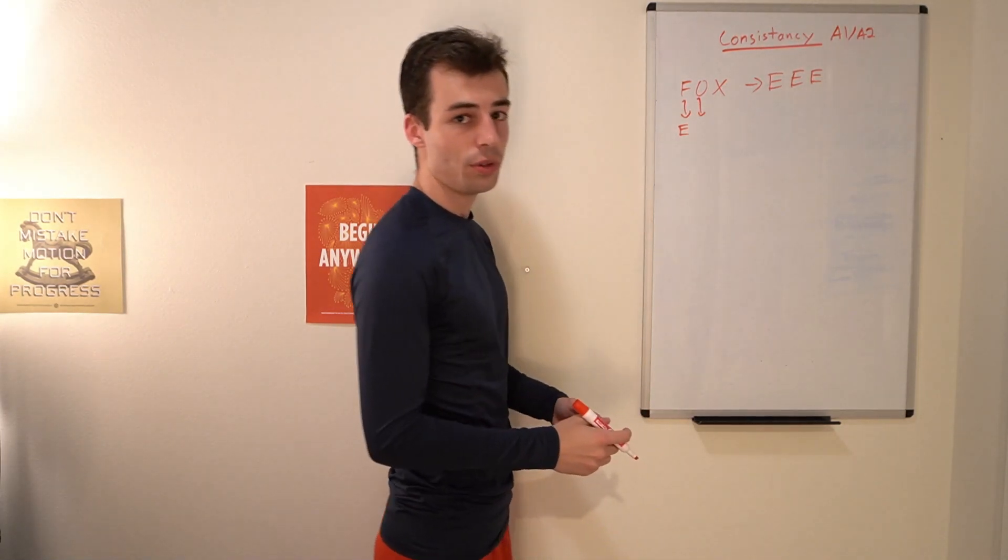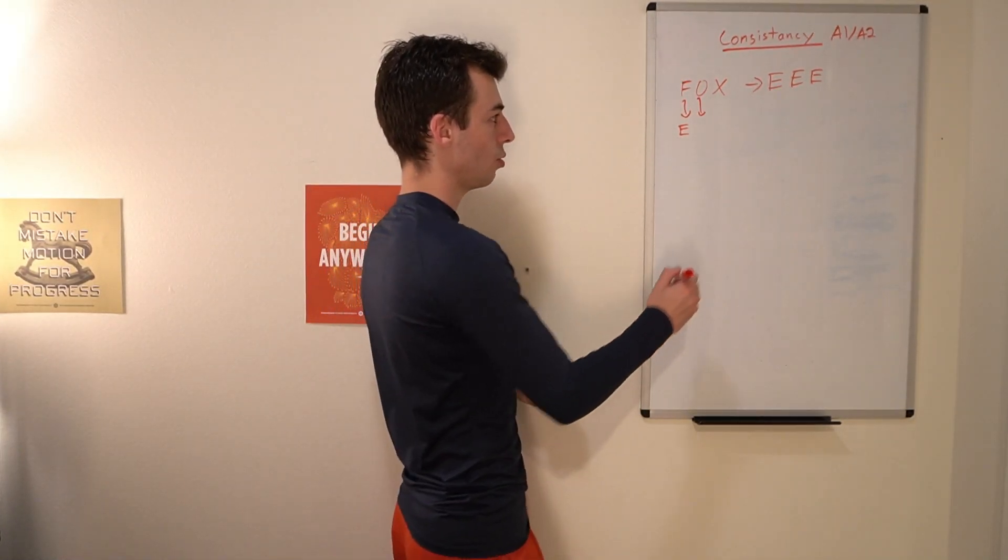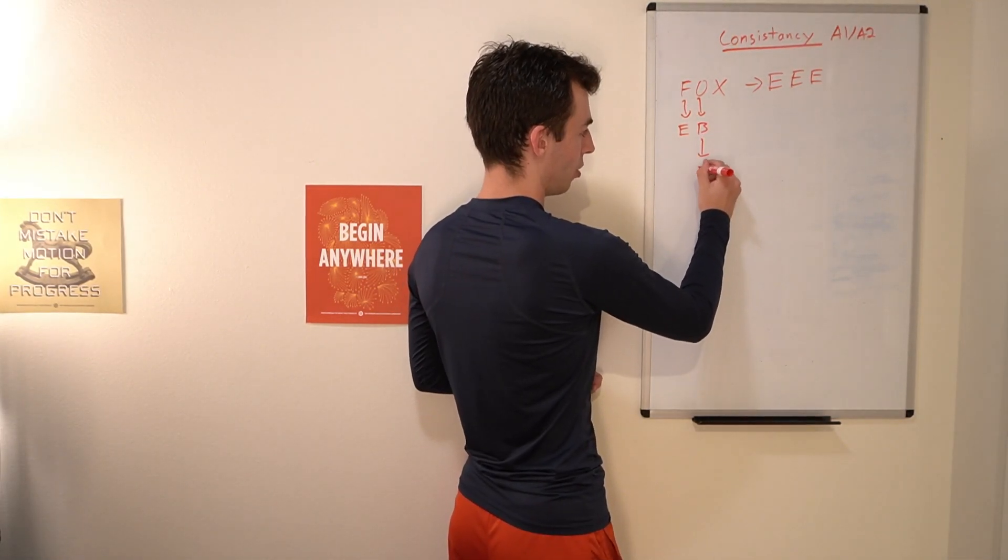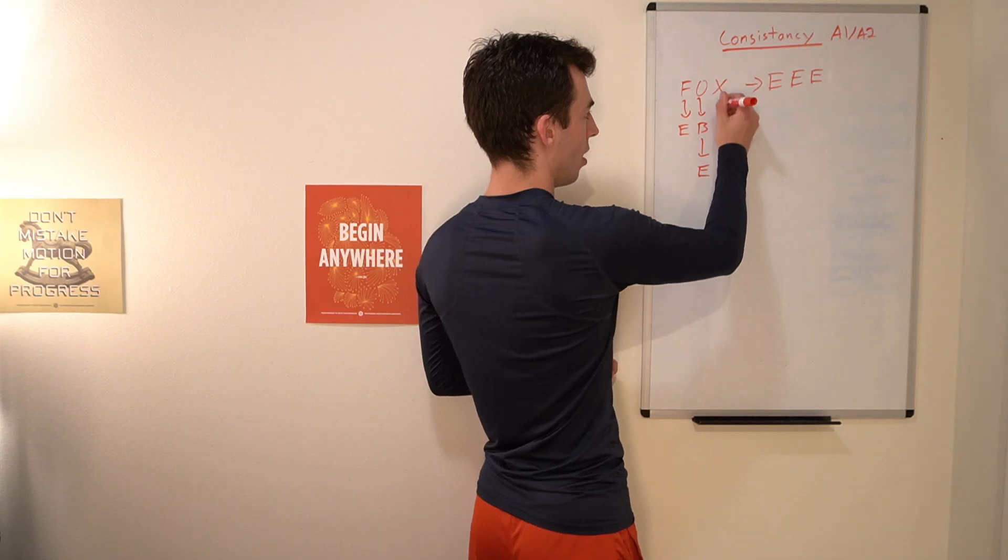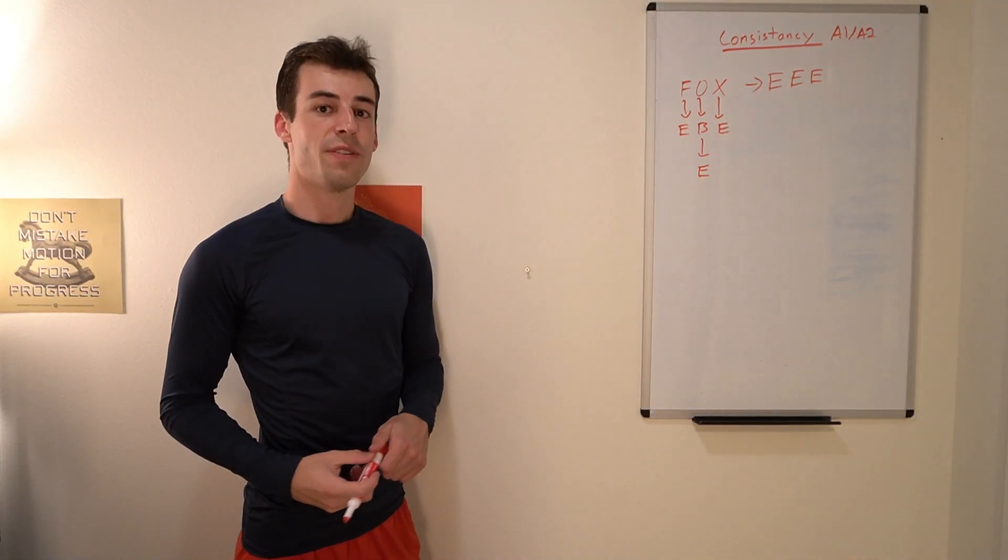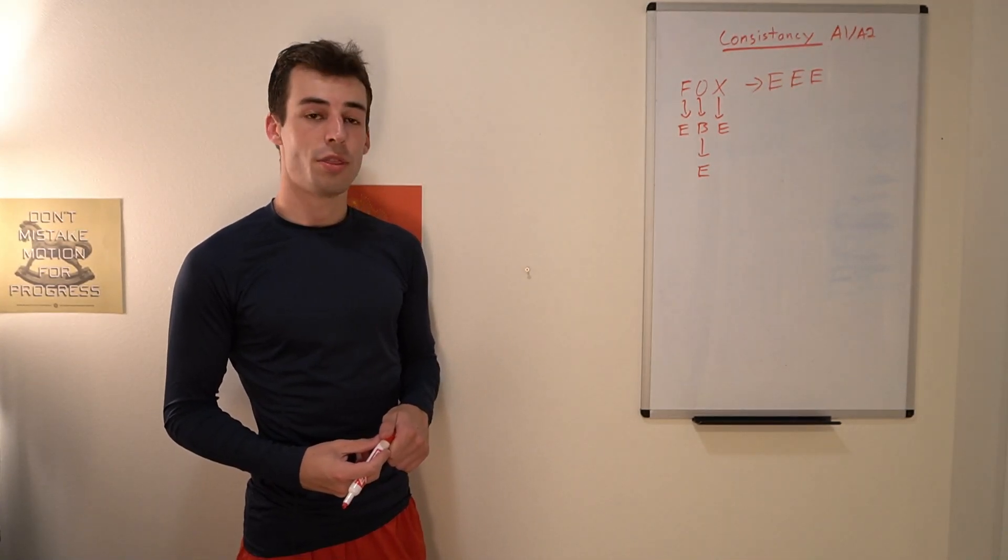The O is a vowel so if we want to turn it into an E we have to use an intermediate consonant. Let's use the consonant B and then we can turn it into an E in two seconds, and then the X we can also turn directly into an E. So we can turn the string fox into three E's in three seconds.